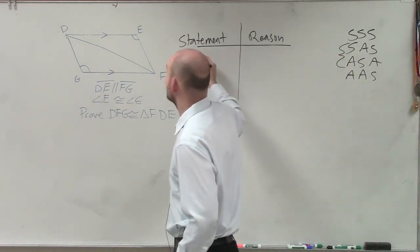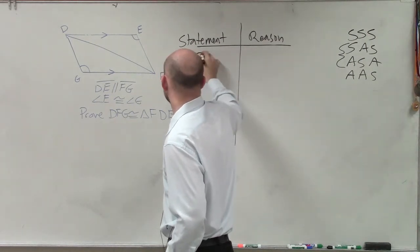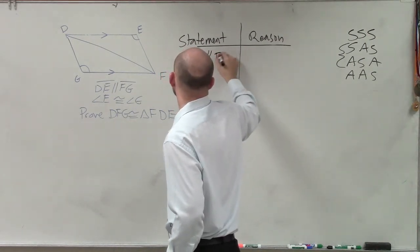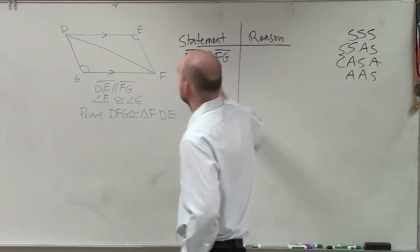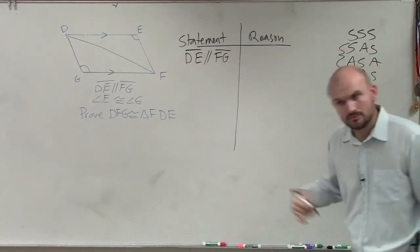So first thing we're going to do is write in our givens. We can say that DE is parallel to FG. Why is DE parallel to FG? Because that's a given.